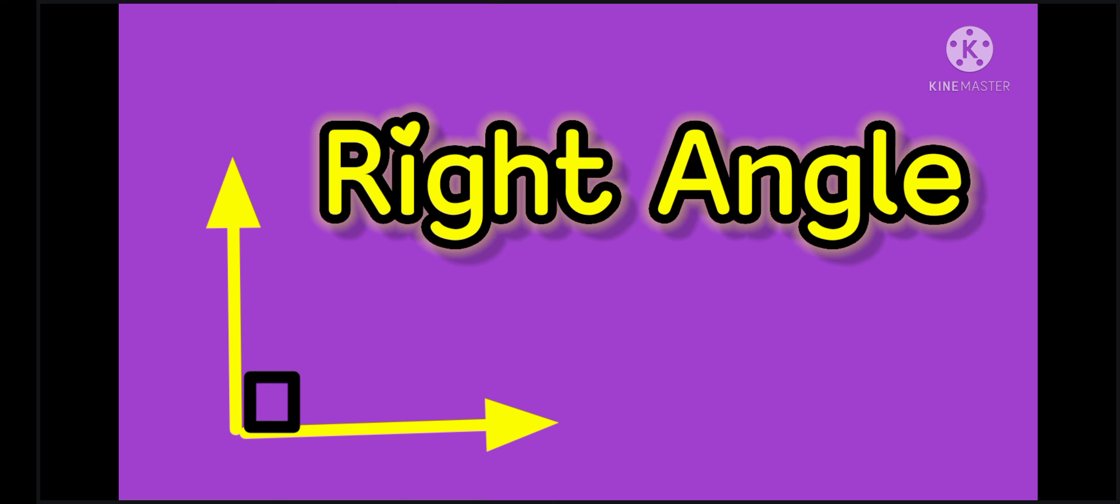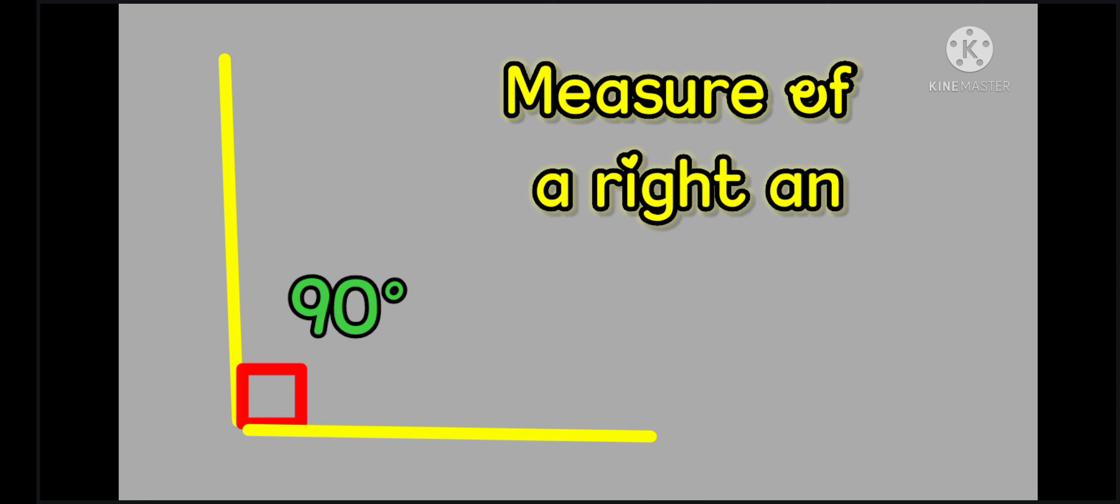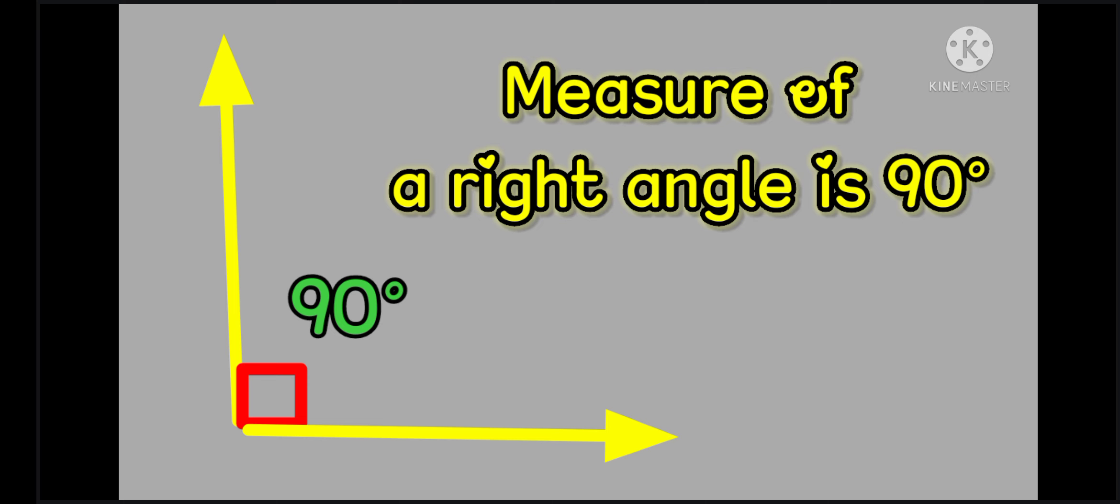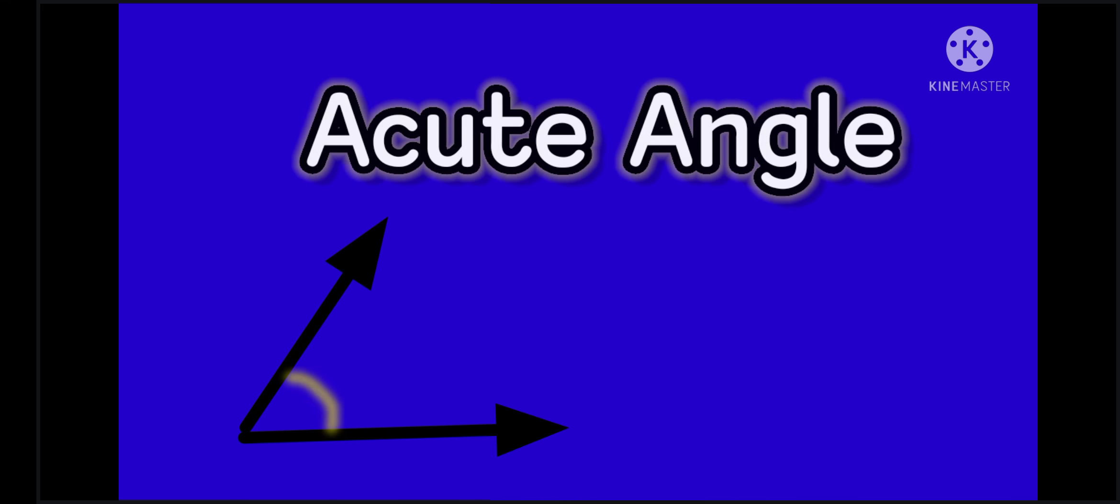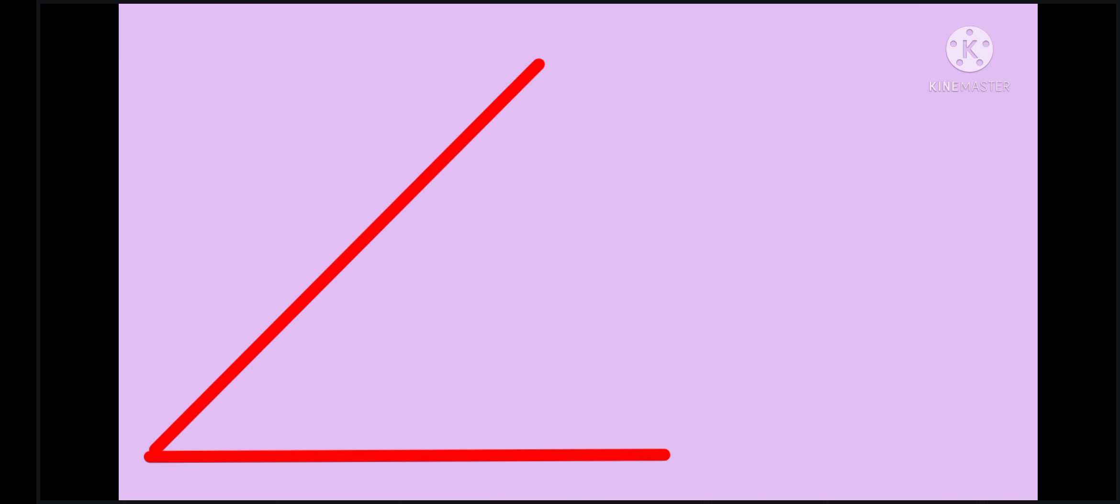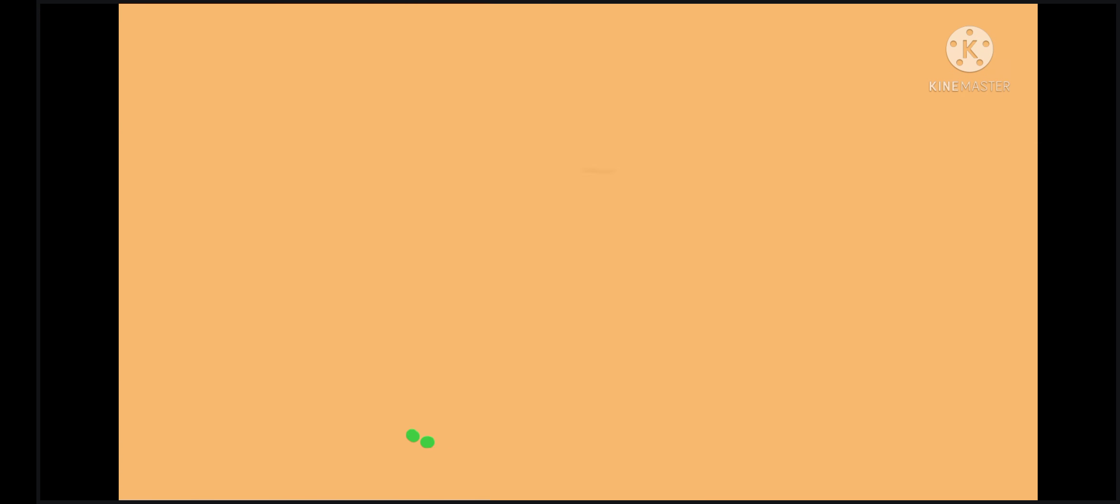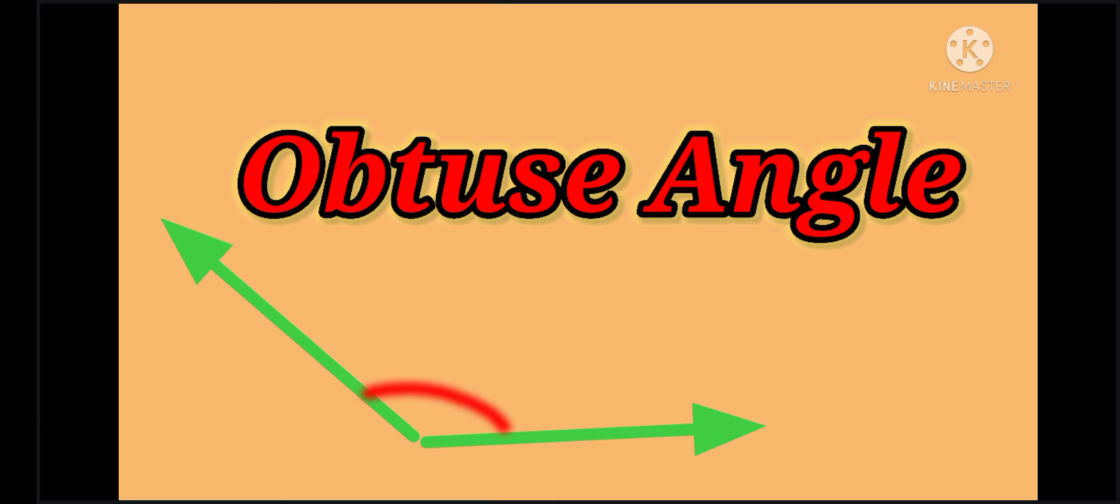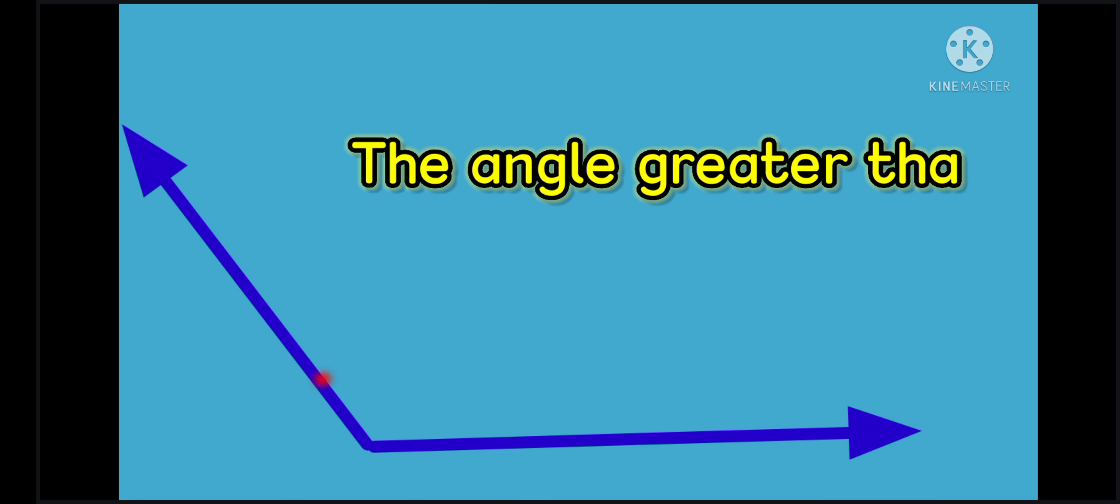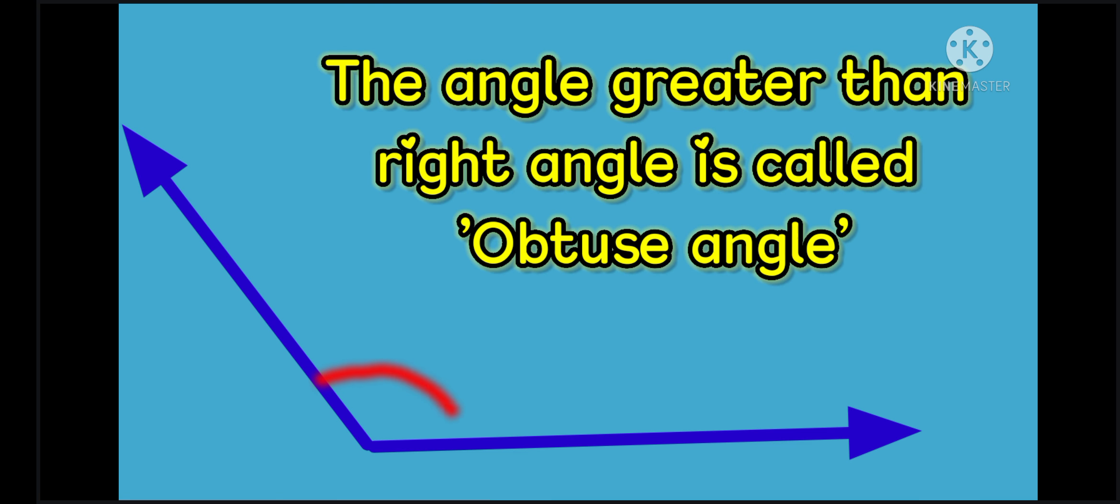Right angle. Measure of a right angle is 90 degrees. Acute angle. The angle less than right angle is called acute angle. Obtuse angle. The angle greater than right angle is called obtuse angle.